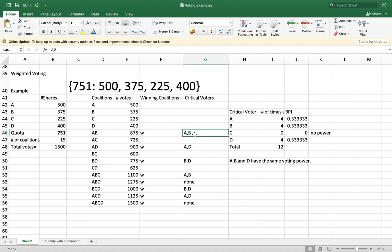We count the total number of critical voters. So voter A becomes a critical voter - we have 1, 2, 3, 4 times. The total is 12 critical voter instances. For candidate A, we have 4. He became a critical voter 4 times. Also B, 4 times. C, 0. D also 4 times. So we get the BPI. The BPI is 4 divided by the total which is 12. Same is true with B, 4/12. C has 0, so it has no power. If the BPI is 0, it means it has no power. And then also D has 4/12. Voters A, B, and D have equal or the same voting power.